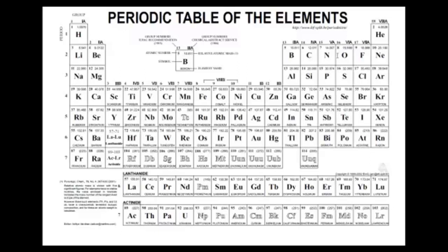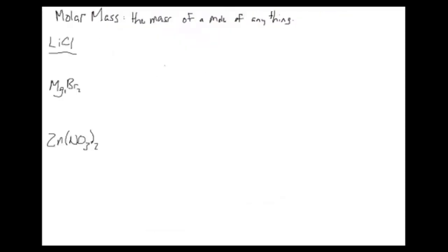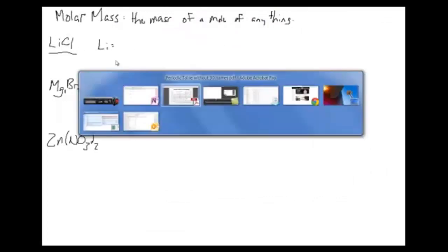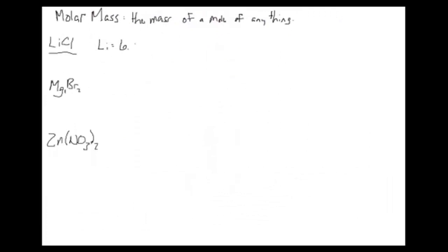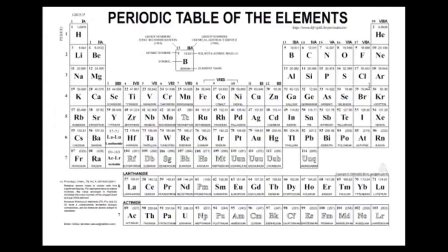Going back to our first example, lithium chloride: we write down lithium and look it up on the periodic table. Lithium has a mass of 6.941 grams per mole. Since there's one lithium for every one chlorine, we also need to look up chlorine. We're going to add these two values together, so we go find chlorine on the far right side of the periodic table.